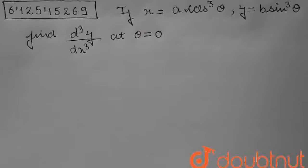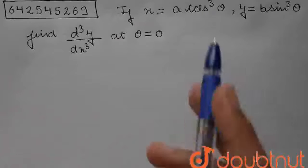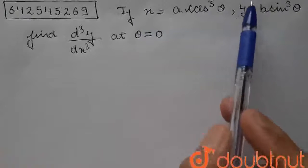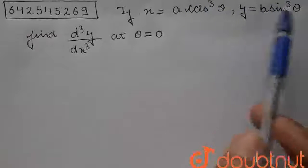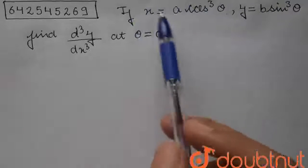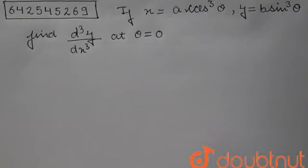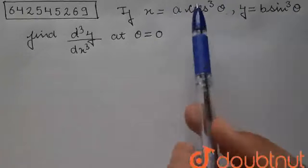So if we look at the question carefully, we are given that x and y are in terms of theta. When quantities are in different theta terms, first we have to find dx by d theta, then we have to find dy by d theta, and then divide these two — dy by d theta divided by dx by d theta — to derive the value for dy by dx. We cannot directly apply dy by dx here.